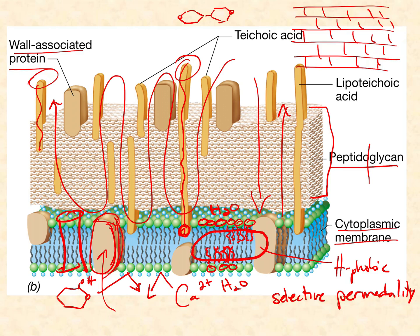The benefit of these lipoteichoic acids, as far as we can tell, is to link the peptidoglycan wall — which is 40 sheets or more of these peptide-linked long polysaccharides, just layer upon layer — to the cytoplasmic membrane, so that they're not moving across one another. The shearing forces of the peptidoglycan across the cytoplasmic membrane can rupture the membrane and kill the cell. So this ensures they move together and you don't get any shearing forces across the surface.